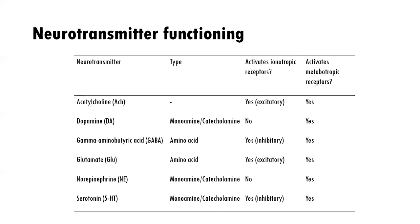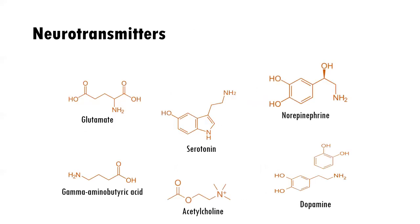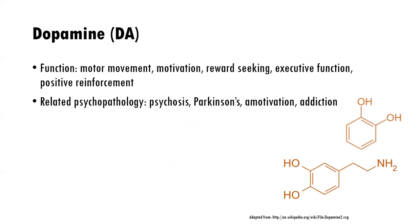Let's learn about each of those neurotransmitters, starting with dopamine. The function of dopamine includes motor movement — you see problems with Parkinson's with low dopamine — and motivation, reward seeking, executive function, and positive reinforcement seen with addiction processes. We get motivated and excited based on dopamine; it helps recruit attention and our priorities. If dopamine is too low, we have amotivation. Related psychopathology includes Parkinson's, amotivation, addiction, and also psychosis — if dopamine is too high, it's associated with hallucinations.